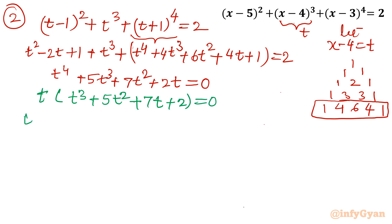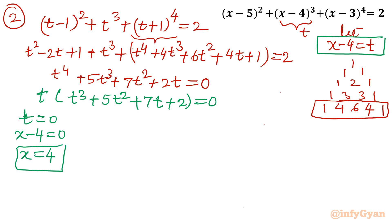t is common, so taking t out: t(t³ + 5t² + 7t + 2) = 0. So t = 0 is one solution. Since x-4 = t, t=0 gives x = 4. One solution is confirmed.